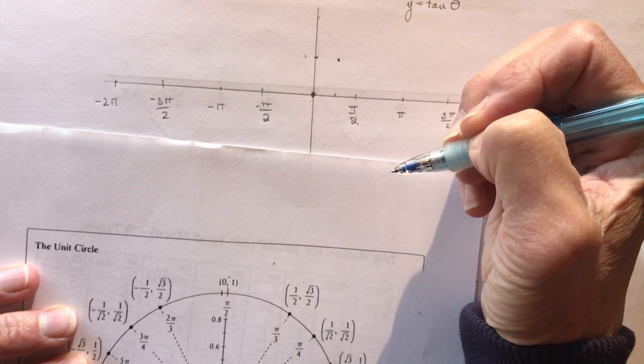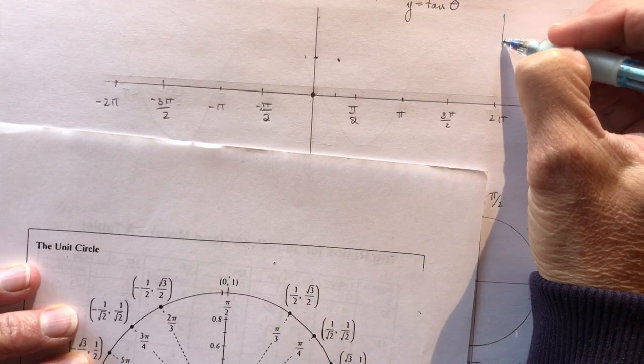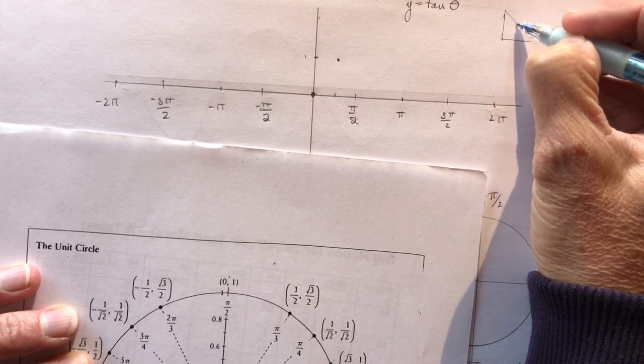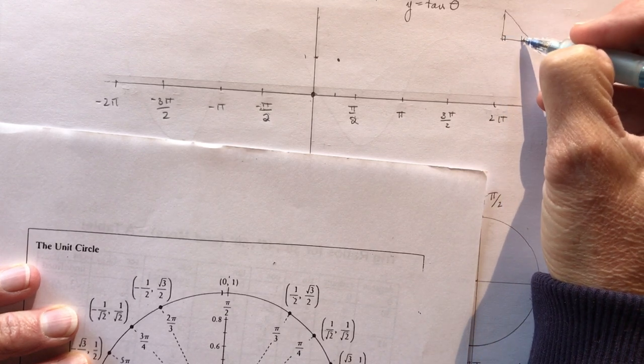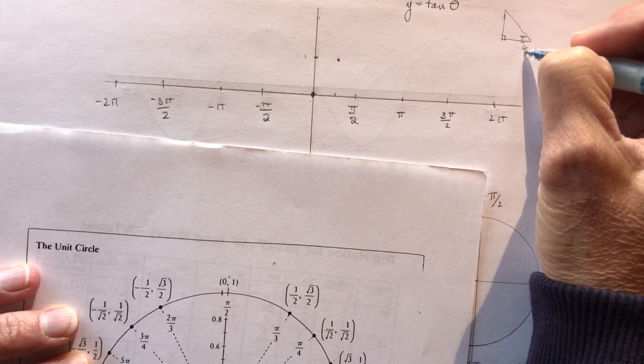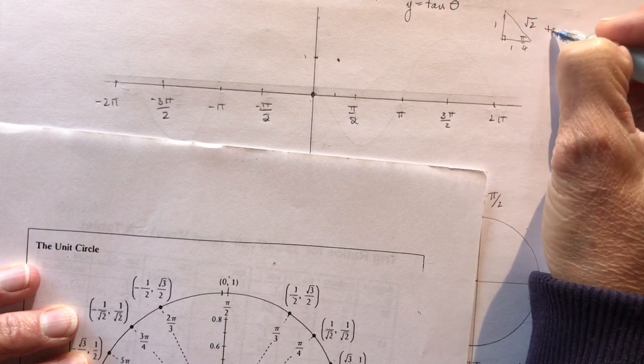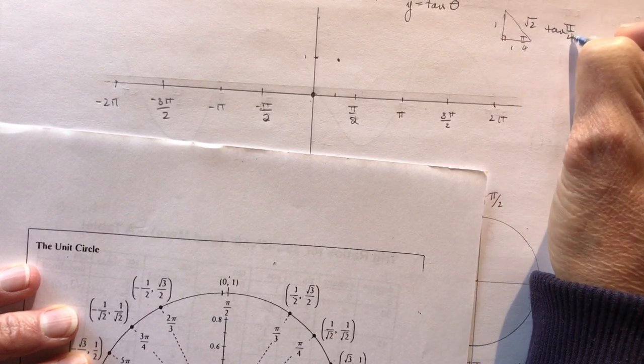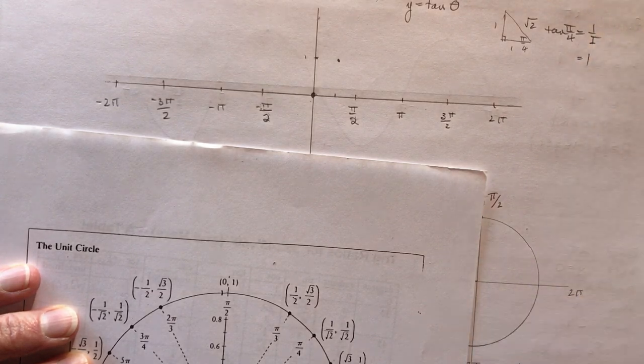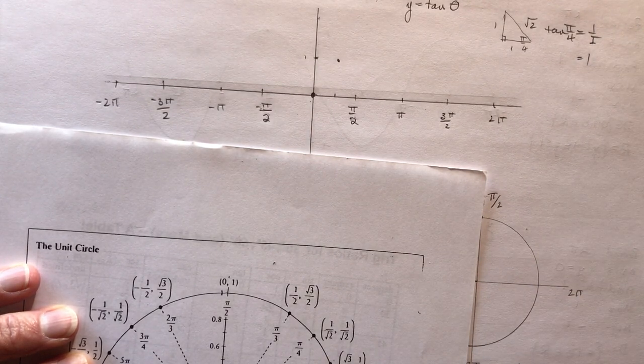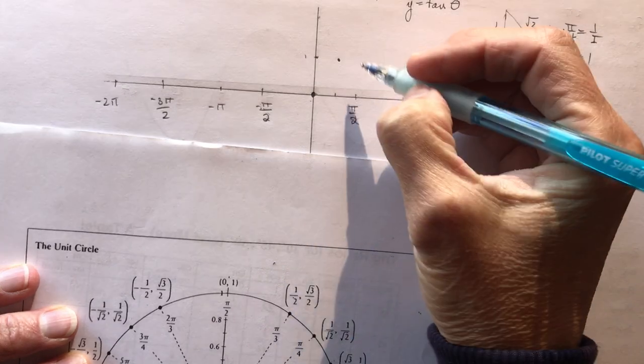And you should know that because that's your exact value for pi over 4, right? Pi over 4, that's 1, 1 square root 2. So tan of pi over 4 is 1 over 1, which of course is 1. So that's a nice easy point for you to find, pi over 4.